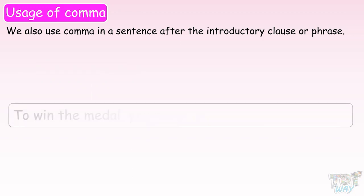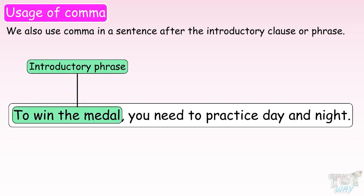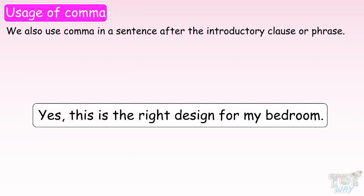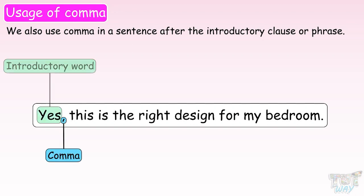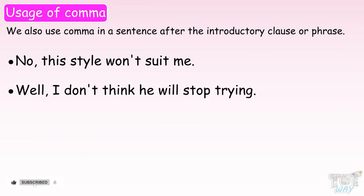Let's have more examples. To win the medal, you need to practice day and night — here we have separated the introductory phrase 'to win the medal' using a comma. Yes, this is the right design for my bedroom — here we have used a comma after the introductory word 'yes'. No, this style won't suit me. Well, I don't think he will stop trying. Here again, we have separated the initial introductory words using the comma.